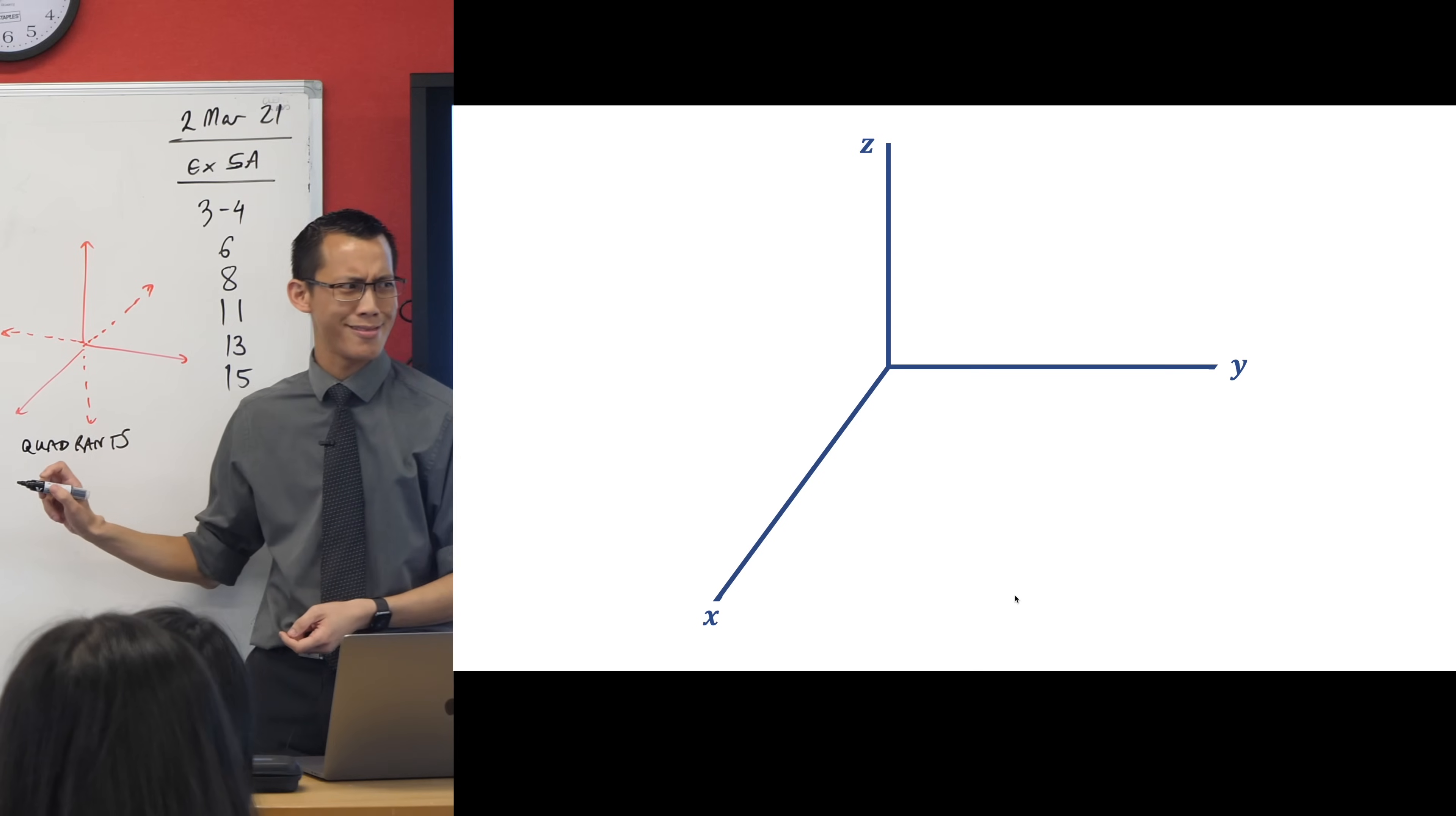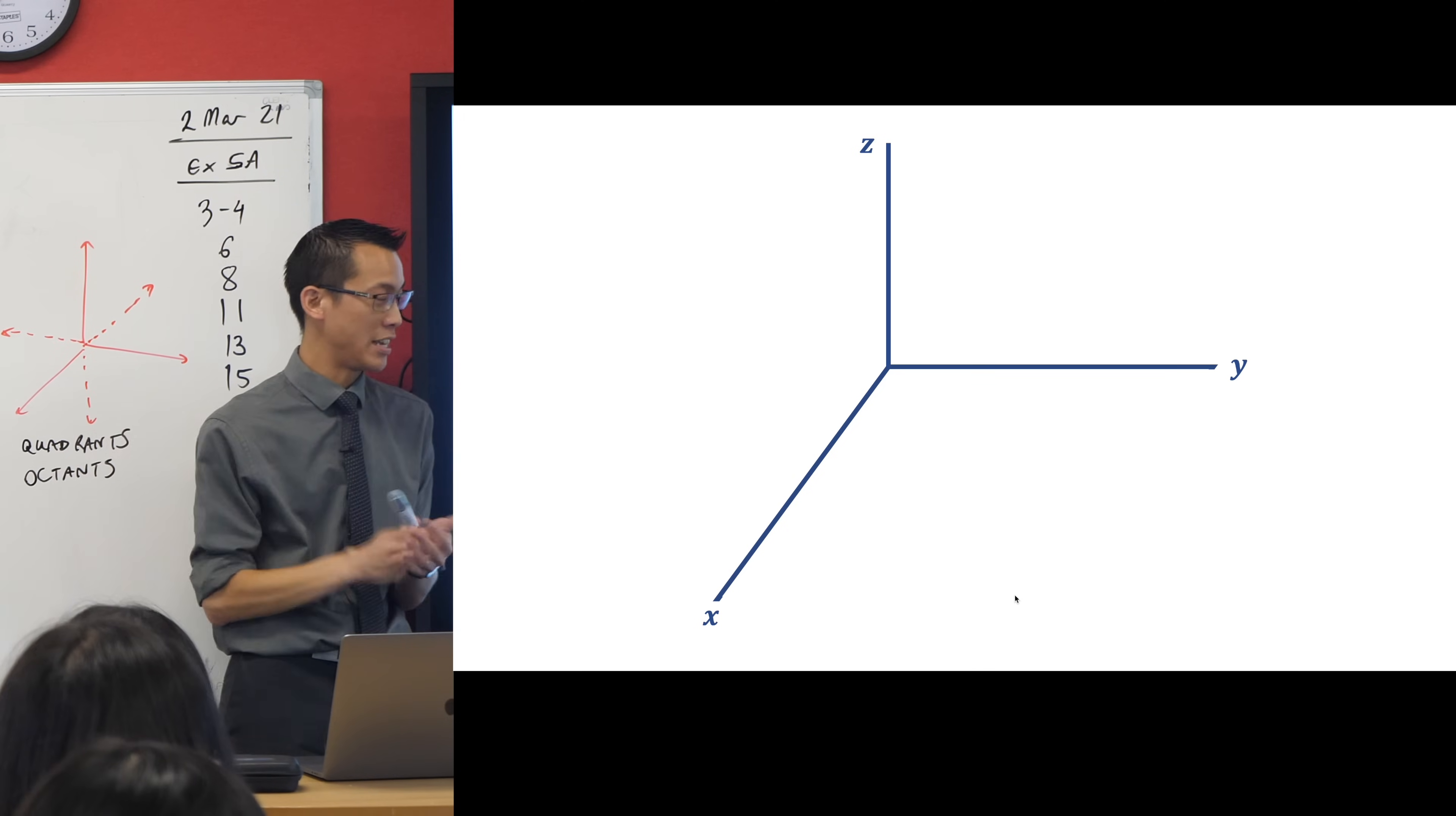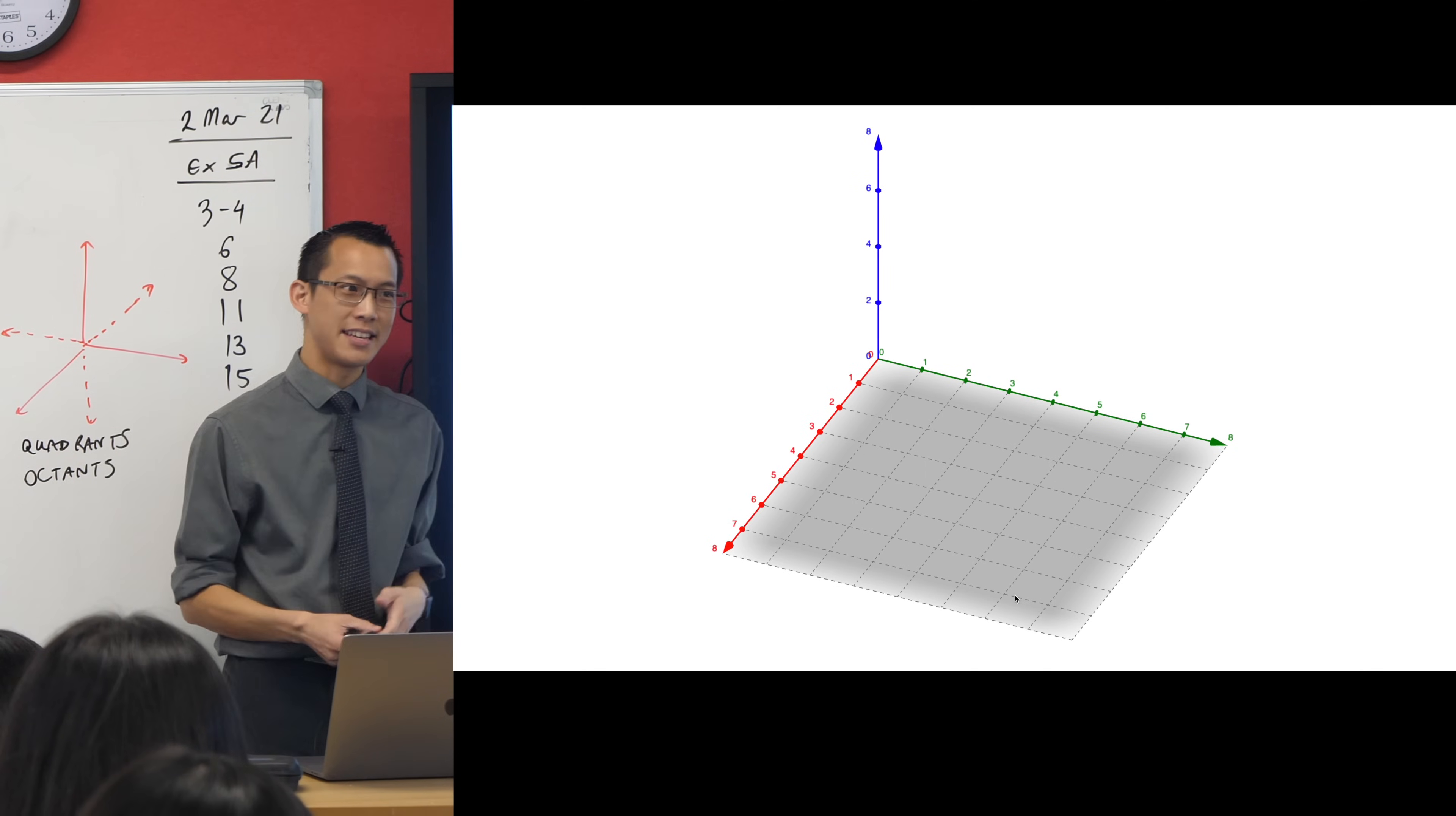So instead of calling them quadrants because that would give you four, what's our prefix to do with eight? Oct. So these are called octants. You've got eight octants that are represented. I've only just shown you one of them.